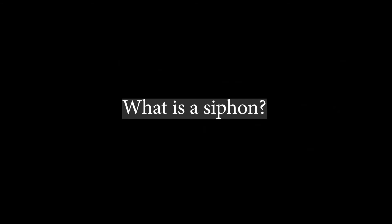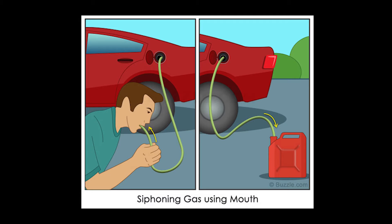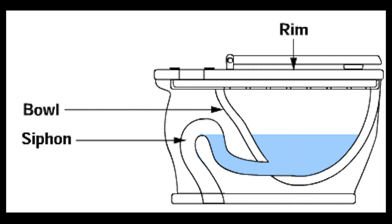A siphon is a long bent pipe that is used to transfer liquid from a reservoir at a higher elevation to another reservoir at a lower level when the two reservoirs are separated by a hill or higher level ground.